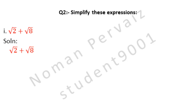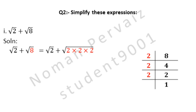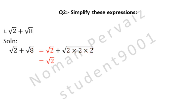We are taking the question as it is: equal to under root 2 plus under root 8. Under root 8 can be written as under root 2 multiplied by 2 multiplied by 2. We factorize 8 — the table of 2 divides 8 three times. So we take under root 2 as common in both terms.